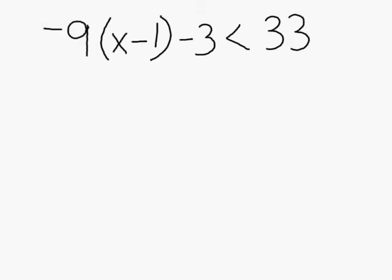The first step in solving this inequality is to take this negative 9 and distribute it with every term inside the given parentheses. So we must multiply negative 9 times x and we must multiply negative 9 times negative 1 as well.